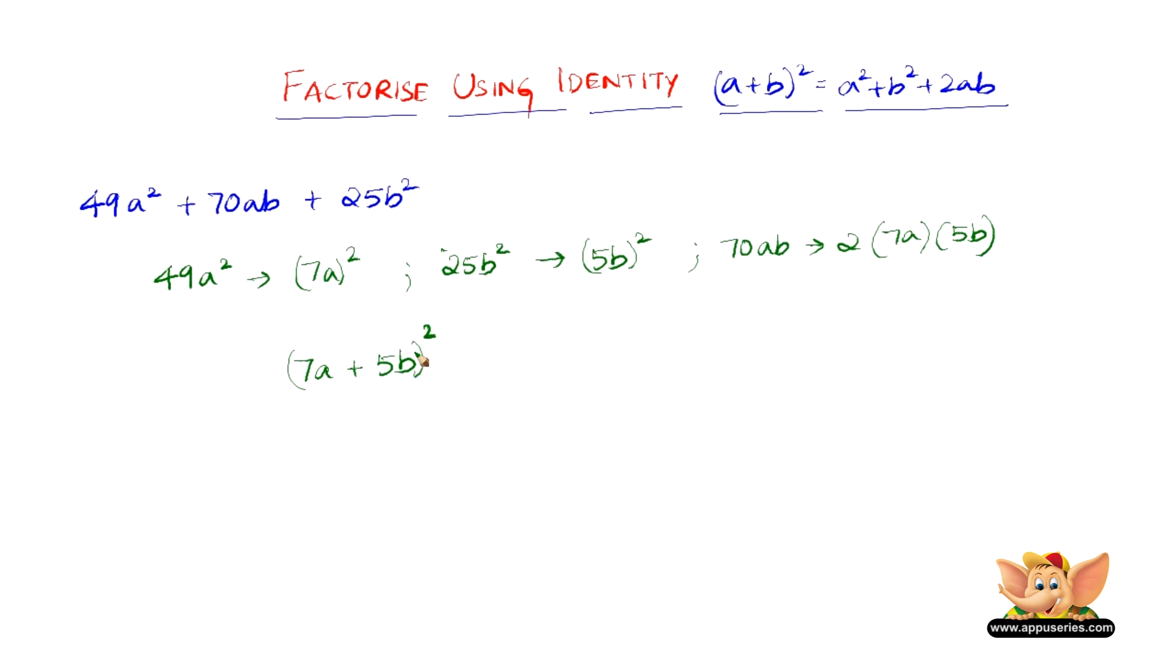Let us quickly check that 7a plus 5b the whole square is 49a square plus 70ab plus 25b square. So all we have to do is 7a plus 5b into 7a plus 5b.